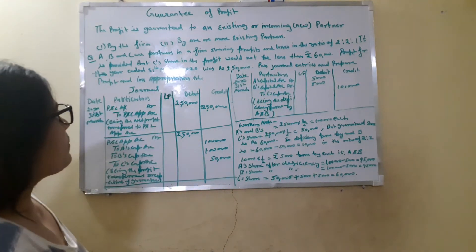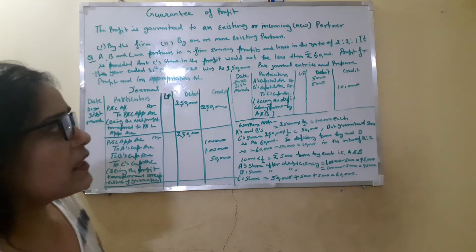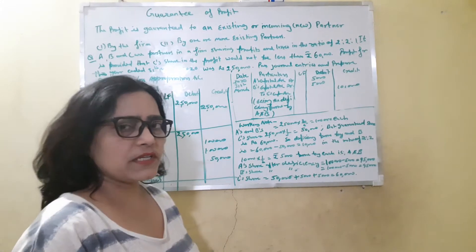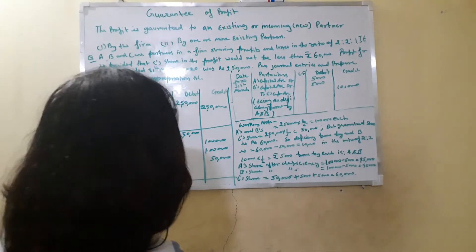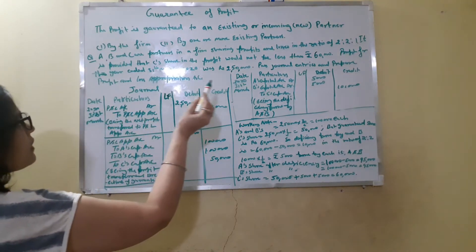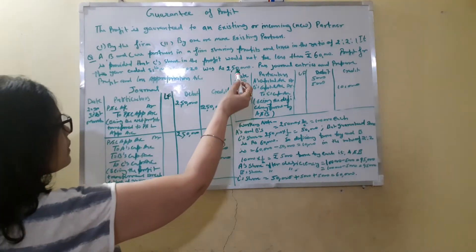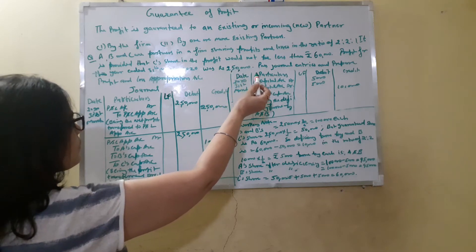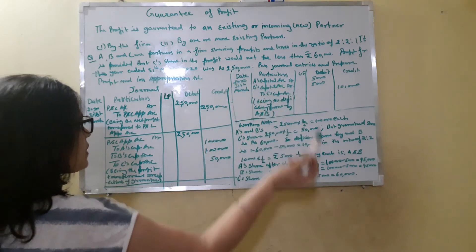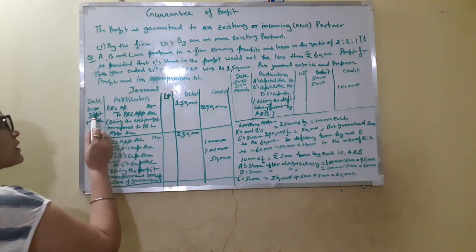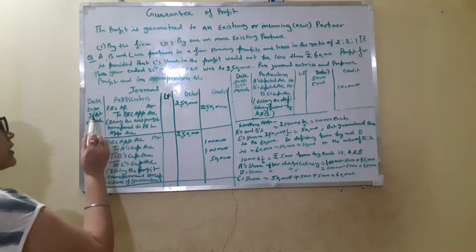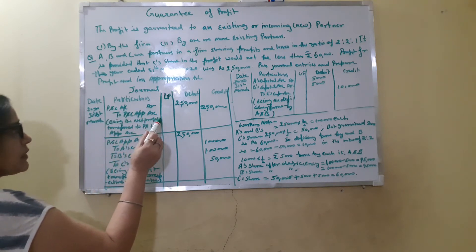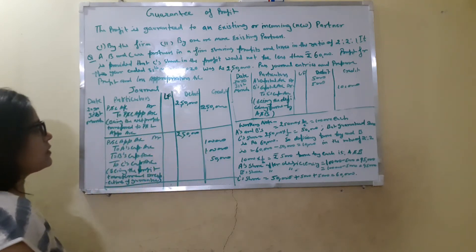We will prepare the journal entries first and then the Profit and Loss Appropriation Account. For journal entries, first we will do the entry to transfer this profit from the Profit and Loss Account to the Profit and Loss Appropriation Account. The first entry on 31st March 2020 is: Profit and Loss Account debit to Profit and Loss Appropriation Account — that is ₹2,50,000.